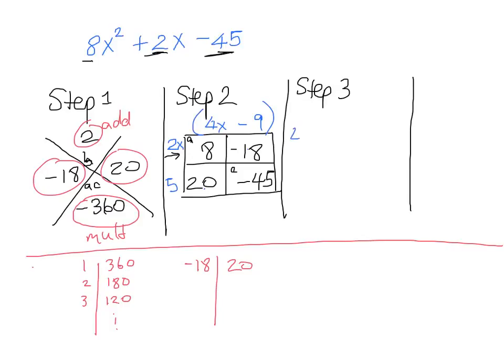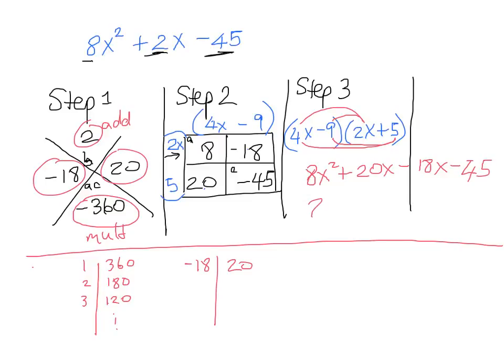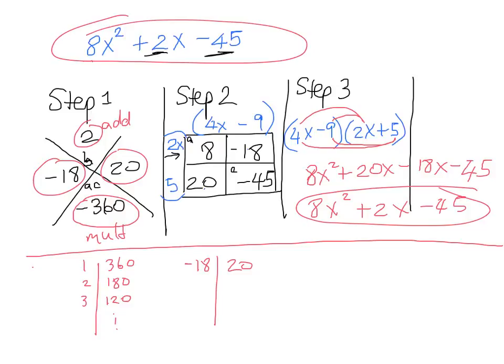Our answer is 4x minus 9 times 2x plus 5. And if you want to check that you're right you can do first outer inner last to check. First we have 4x times 2x gives us 8x squared. Outer 4x times 5 gives us 20x. Inner negative 9 times 2x gives us negative 18x. And last negative 9 times 5 gives you negative 45. And like magic we have 8x squared plus 2x minus 45. That's exactly what we wanted.